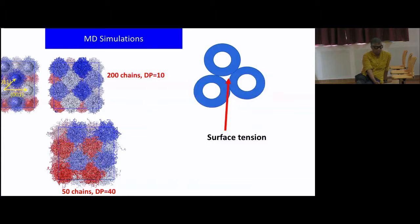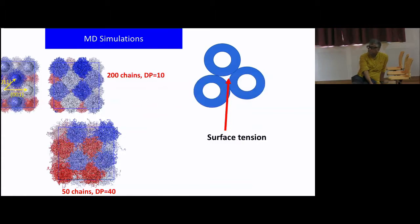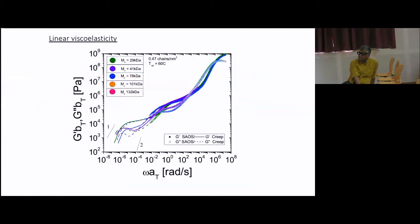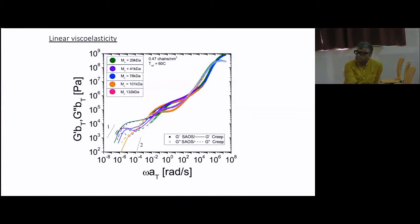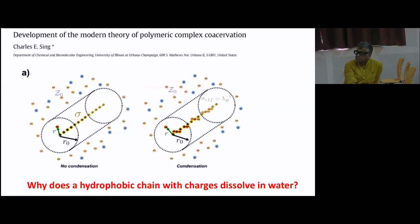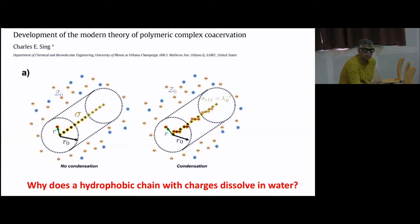This has immediate practical consequences and that's why people are very excited about it. They want to understand the connections between the corona layer structure, the assembly structure, and the transport properties.